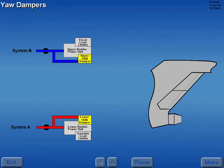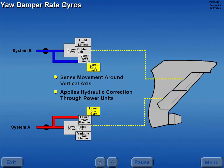The upper and lower rudder power units both incorporate yaw dampers. Yaw dampers sense movement around the aircraft's vertical axis through rate gyros which automatically applies a hydraulic correction through the rudder power units.